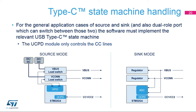The Type-C state machine is implemented in software and depends not only on CC pin levels but also on the port role. In sink mode, it depends on VBUS presence detection; in source mode, it depends on VCONN generation and the VBUS state (on, off, voltage level, and discharge). The UCPD module only controls the CC lines; other modules are involved to control the VBUS and VCONN power supplies. In source mode, GPIOs are required to control power delivery dynamically; in sink mode, ADC channels are used to monitor VBUS and VCONN supplies.